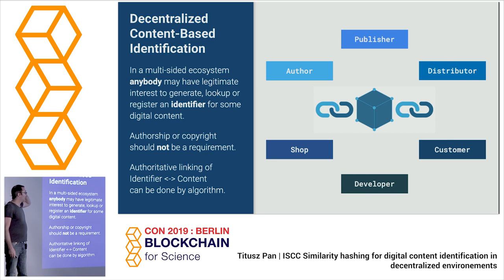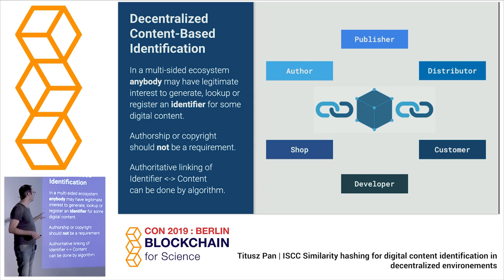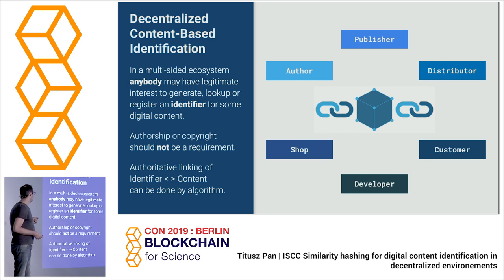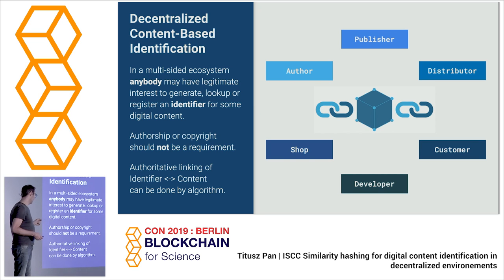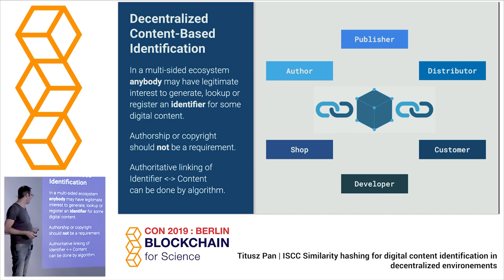For decentralized content-based identification, one key principle many people don't get is that in a multi-sided ecosystem, anybody may have a legitimate interest to generate, look up, or register an identifier for some digital content, because it's a means of communication. Authorship or copyright should not be a requirement to get an identifier — the identifier might be used to communicate authorship, but it is not a requirement. The authoritative linking of identifier and content — what we call the binding — can be done by algorithm.